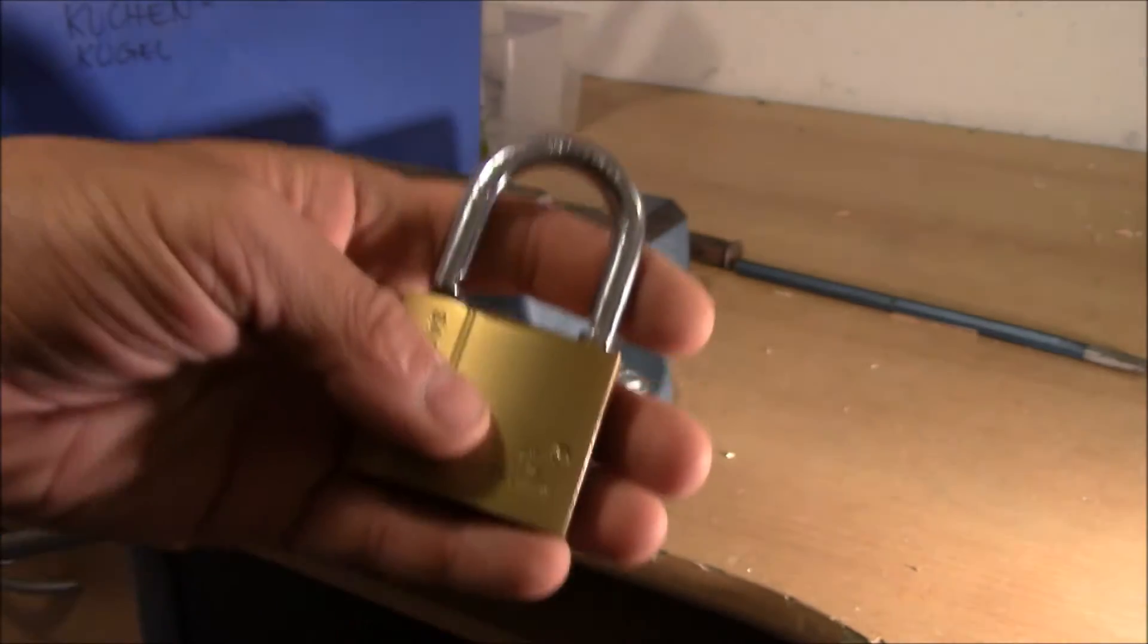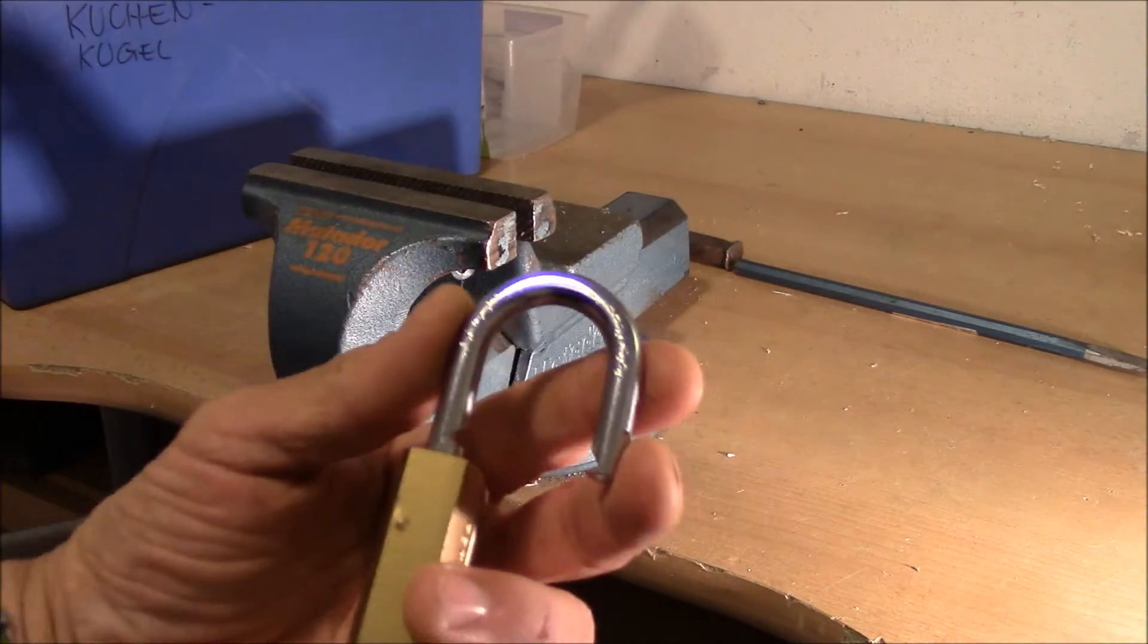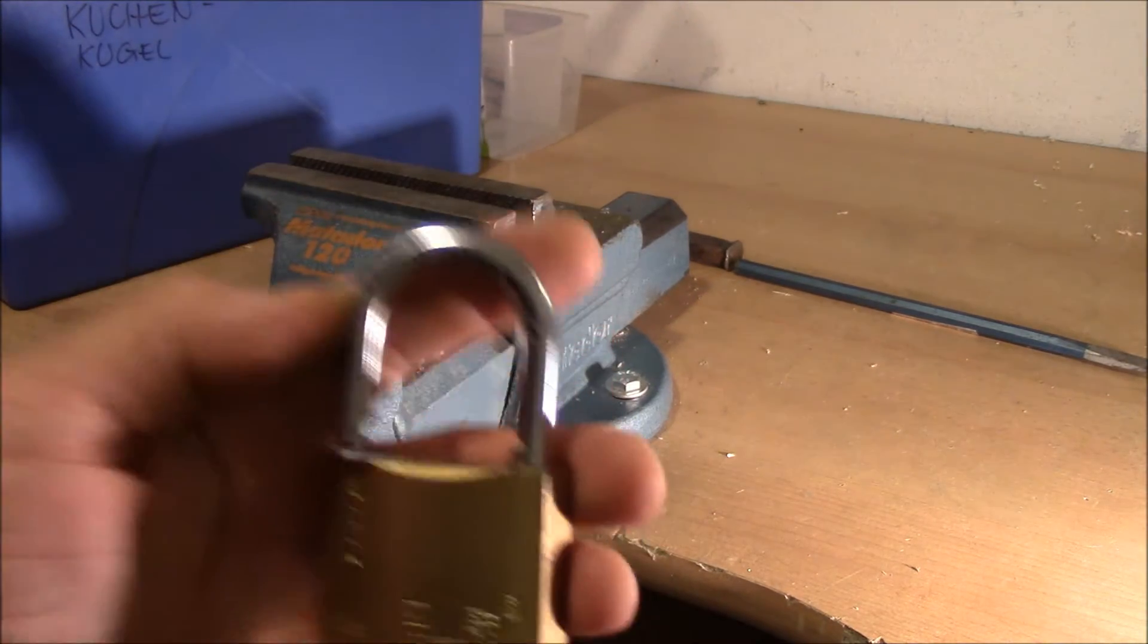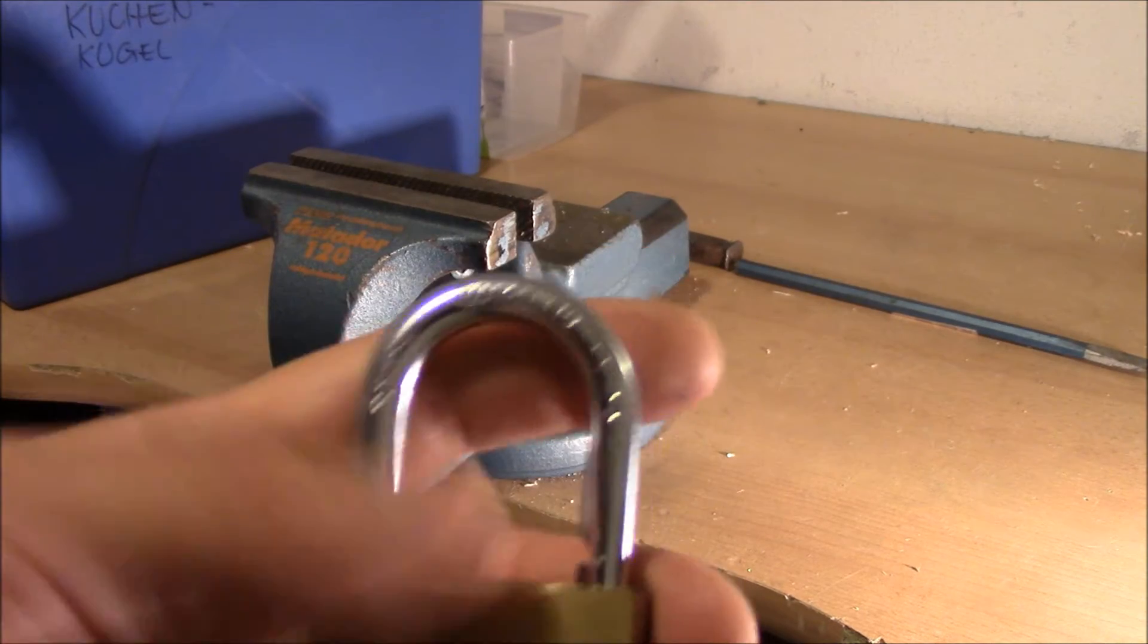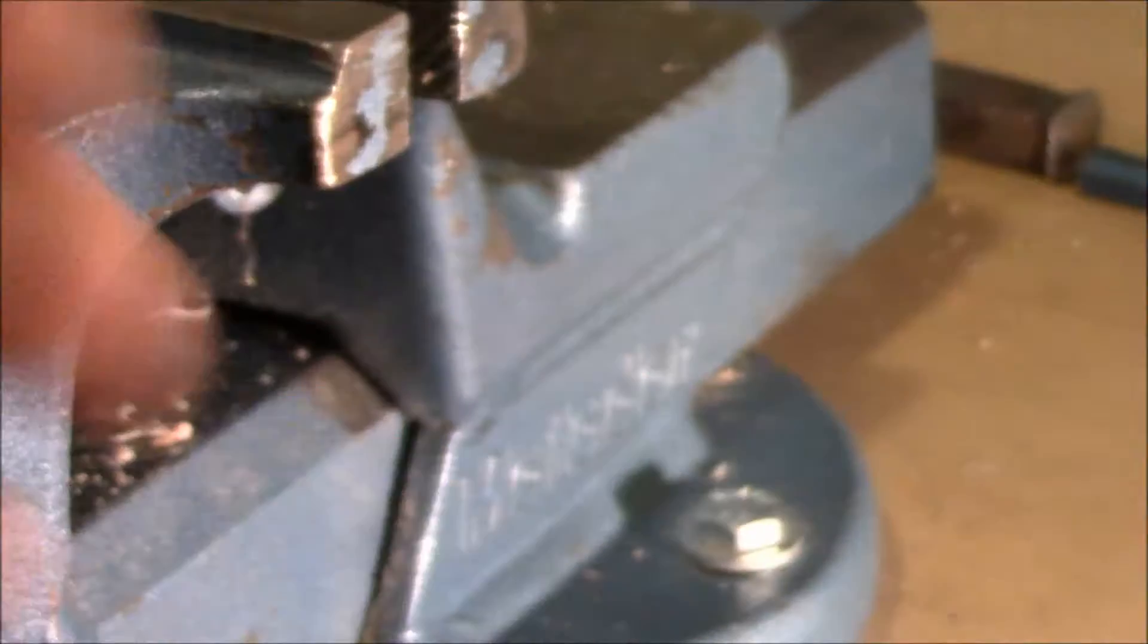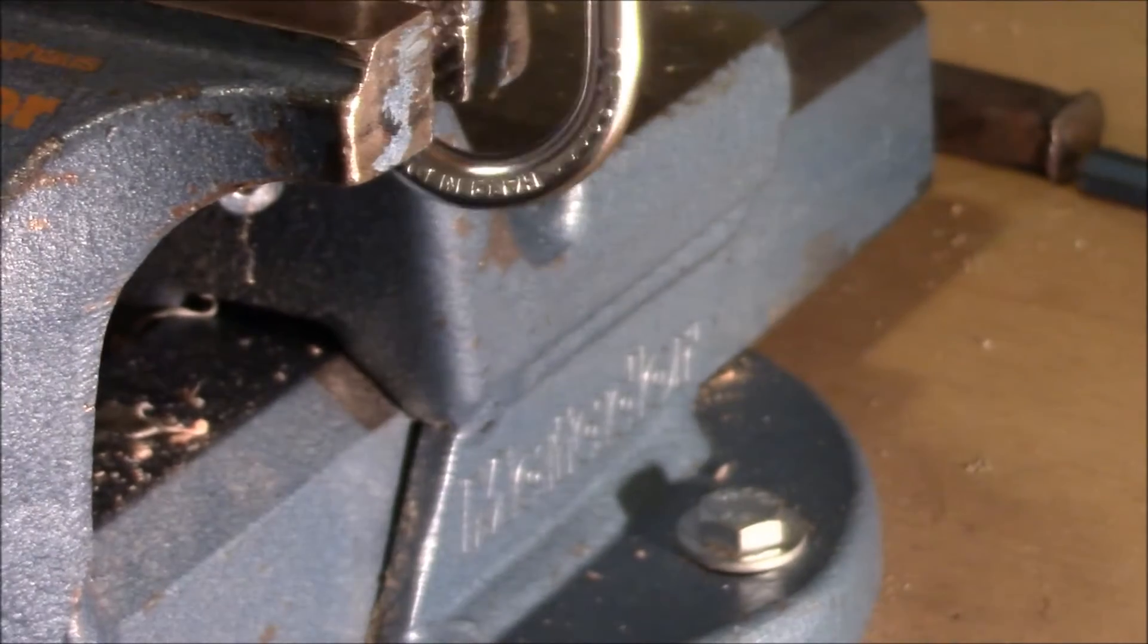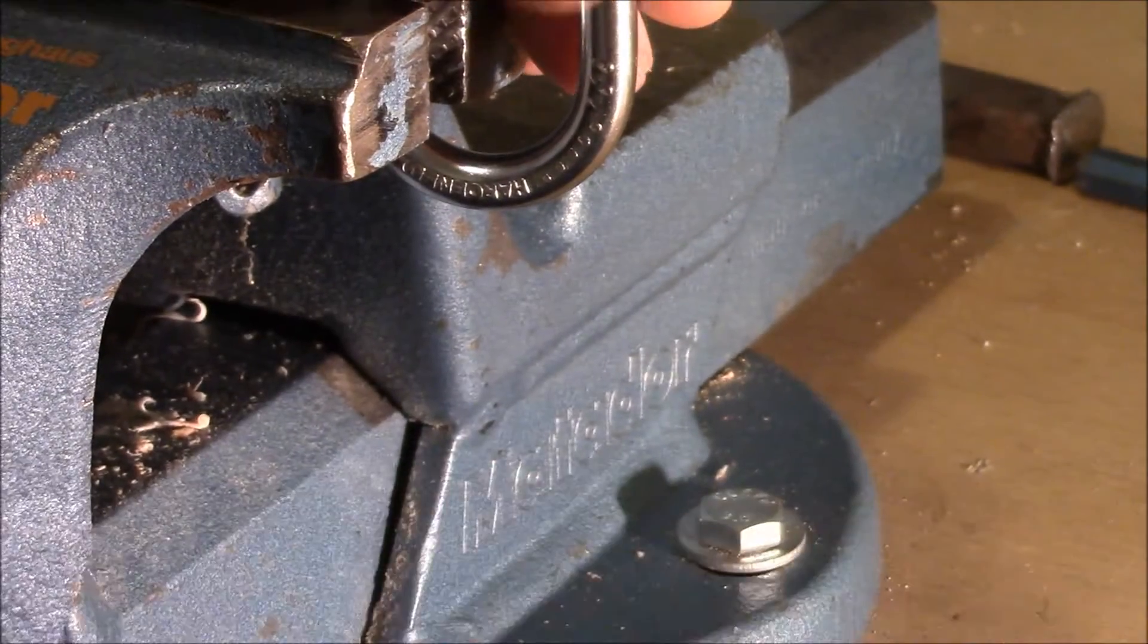Let's continue. I want to try to cut through the shackle because it shouldn't be possible to cut through the shackle as it says here hardened. The camera would focus. Hardened, yeah. Now we can read it. So it should not be possible to easily cut through the shackle. I will try it.